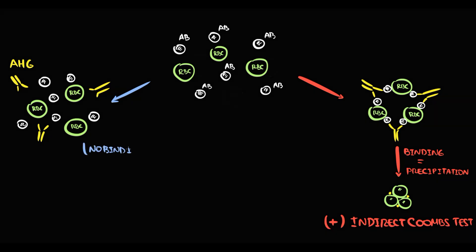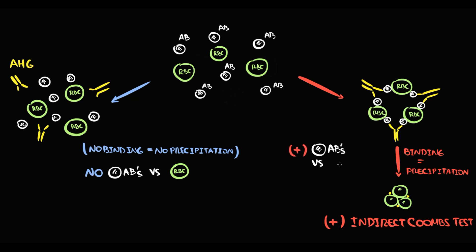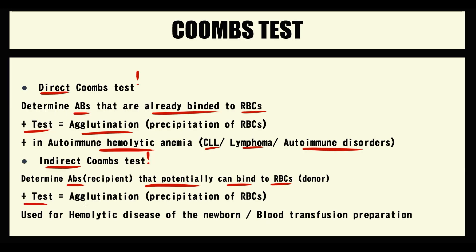So in the first case, anti-human globulin does not bind to red blood cells simply because there are no antibodies against red blood cells. In the second case, because there are some antibodies against red blood cells, the test is positive — if agglutination occurs. The indirect Coombs test is used for prevention, for example to prevent hemolytic disease of the newborn or to prevent complications in blood transfusion. So when we talk about the direct Coombs test, we are talking about the present. When we talk about the indirect Coombs test, we are talking about the future.